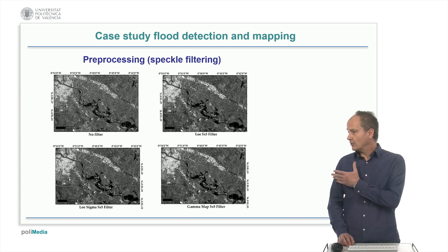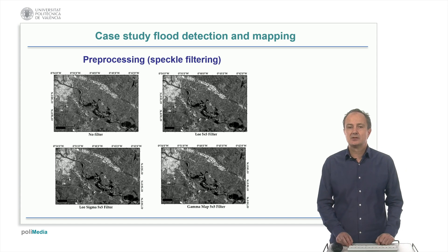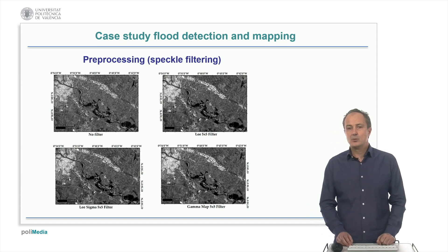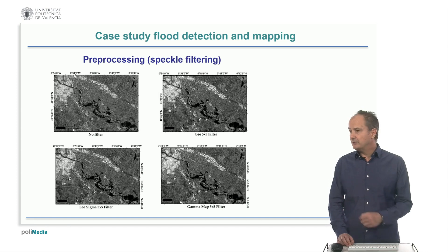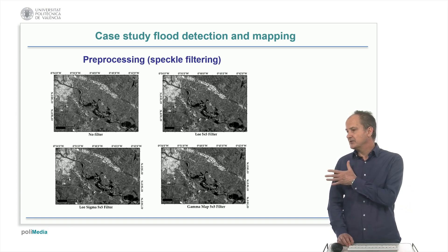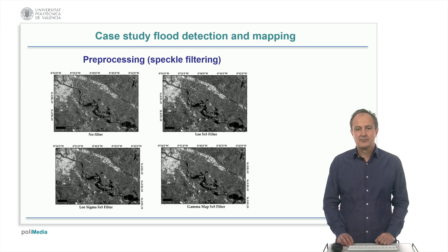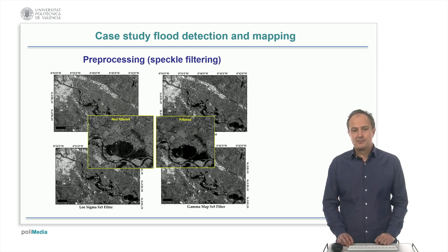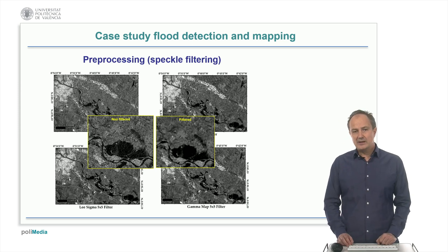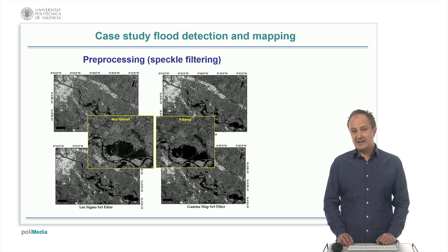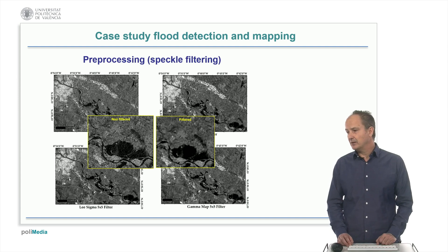Here we see a portion of the original image on the upper left without any filtering, and the results of applying three different filters — Lee, Sigma, and Gamma — using neighborhoods of 5x5 pixels. In this detail, we can appreciate better the effect of the filtering, reducing the granular aspect of the speckle noise and smoothing the flooded areas.